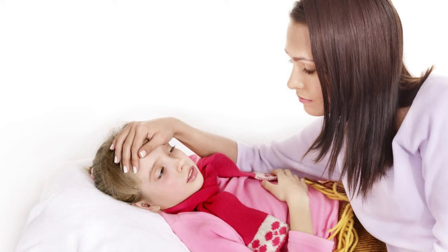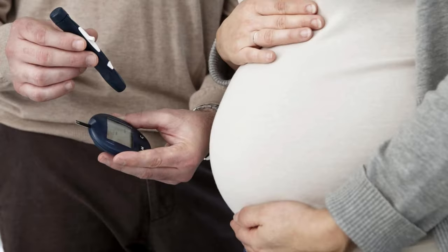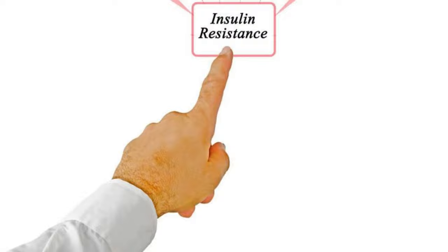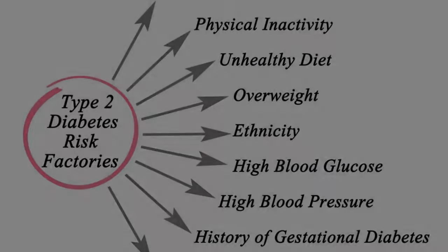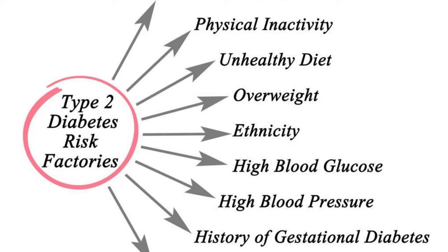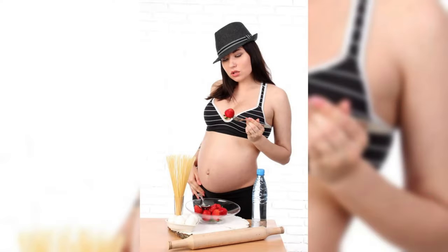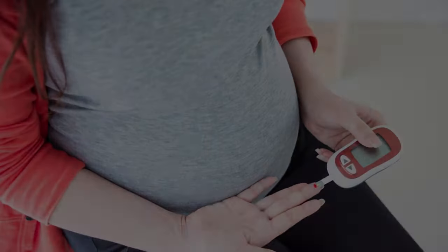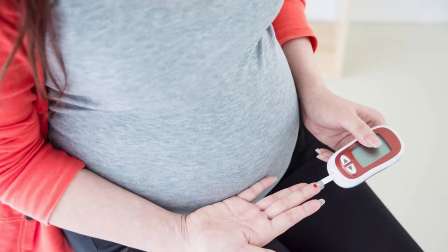Apart from this, the child may have difficulty in breathing for some time after birth. Gestational diabetes usually occurs in the last months of pregnancy. During this period, insulin secretion decreases due to hormonal imbalance. Also, if someone in the family has diabetes, the possibility of gestational diabetes increases. Not exercising during pregnancy, not exercising caution in eating habits, and eating too much sweets can lead to the problem of gestational diabetes.